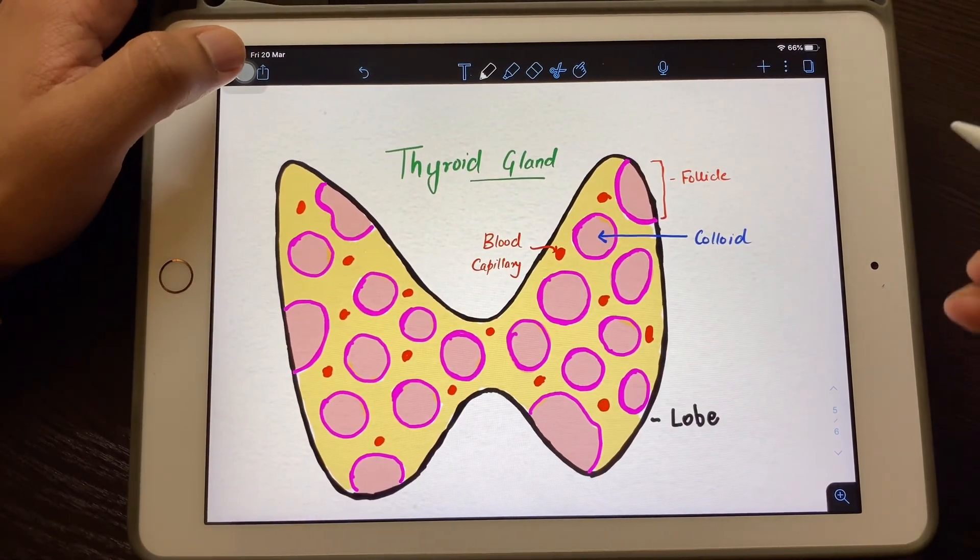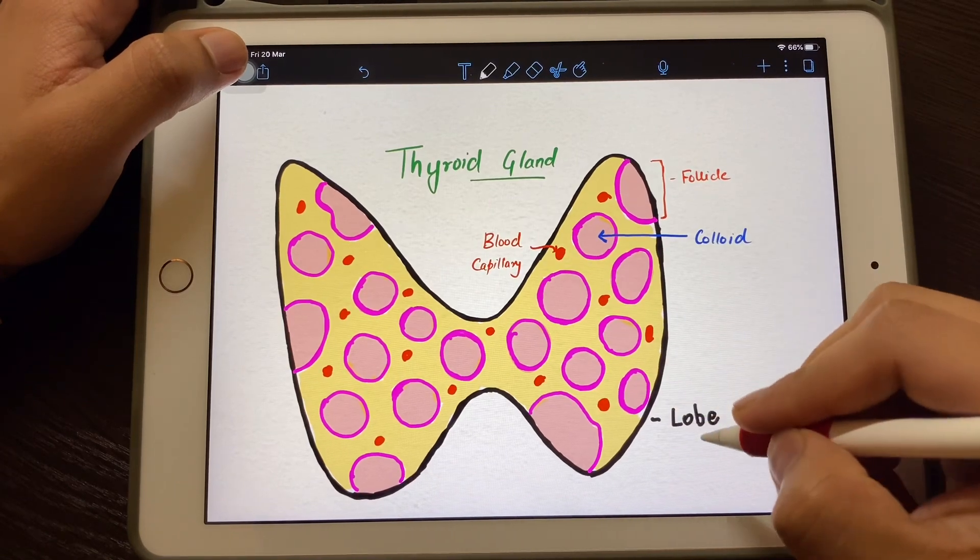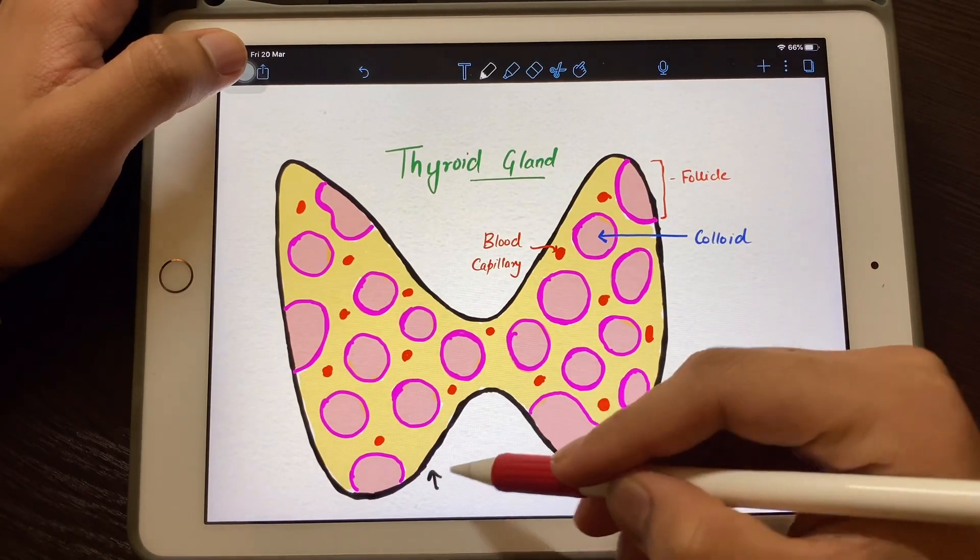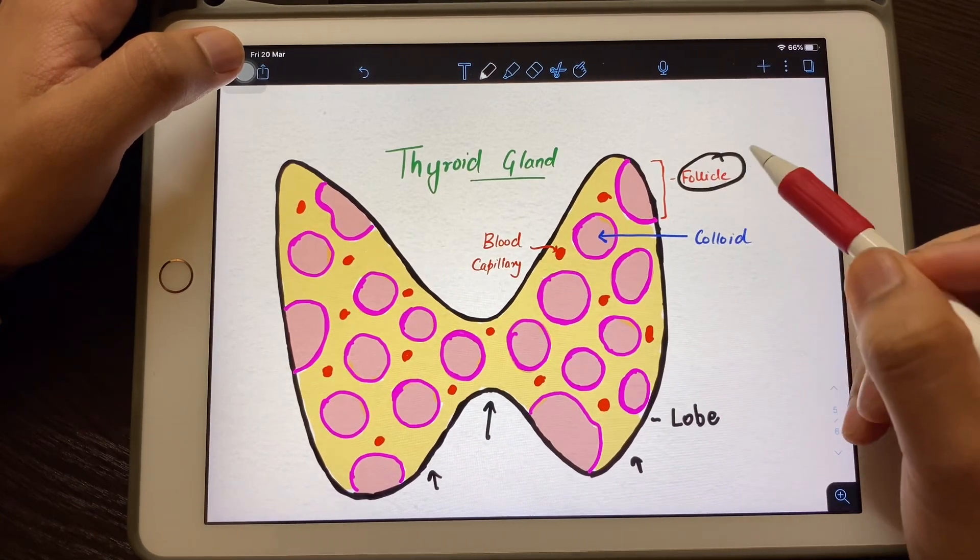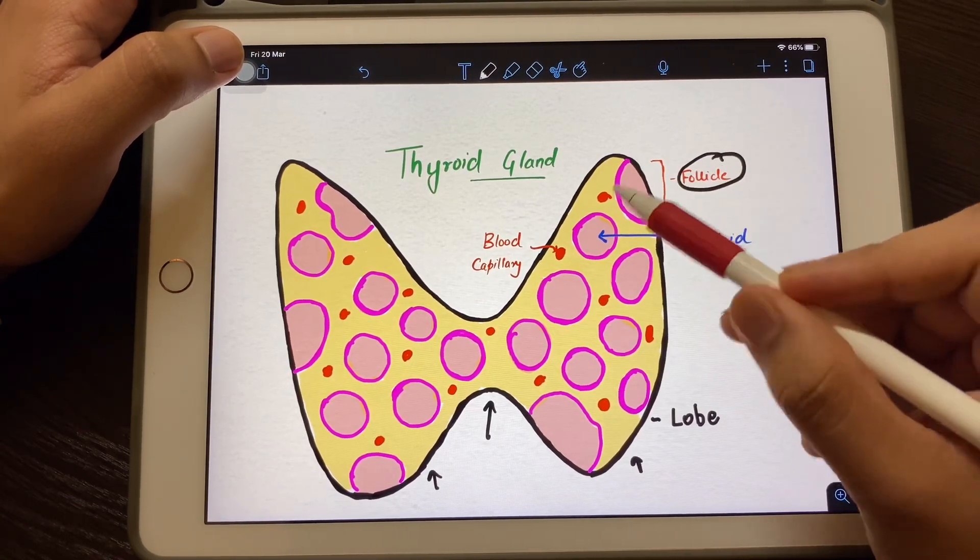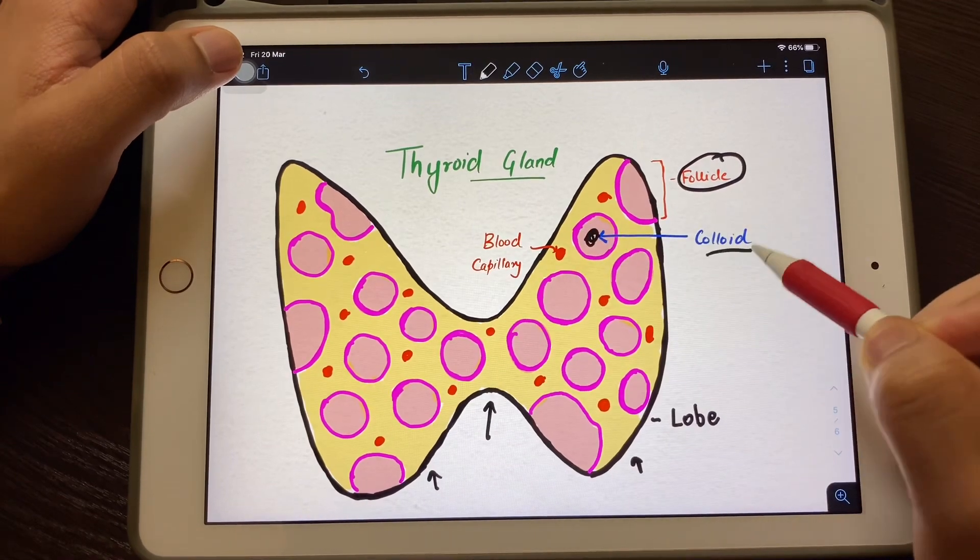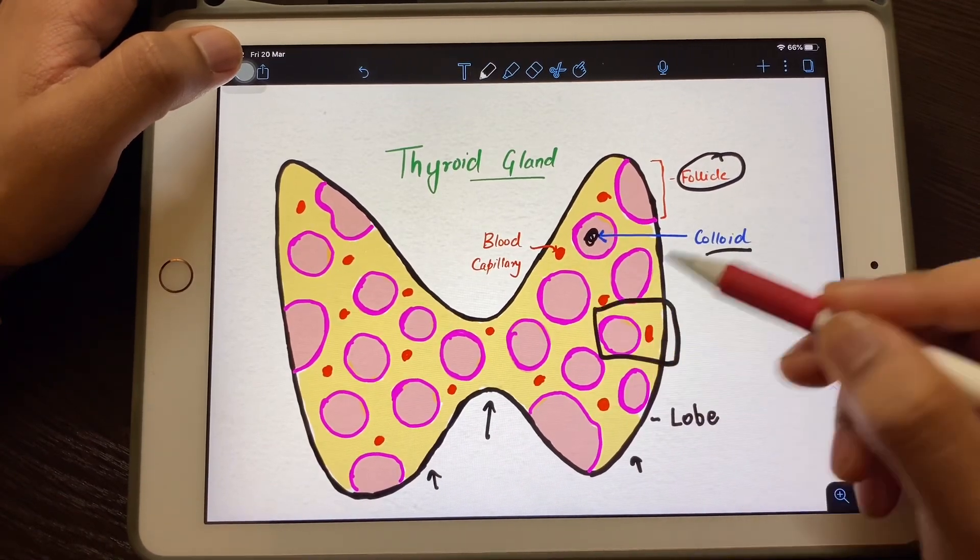This is a thyroid gland. If you see, there are two lobes—this is the first lobe and this is the second lobe. This center part is the isthmus. In the thyroid gland, many follicles are present, and between these follicles, this part is the colloid.